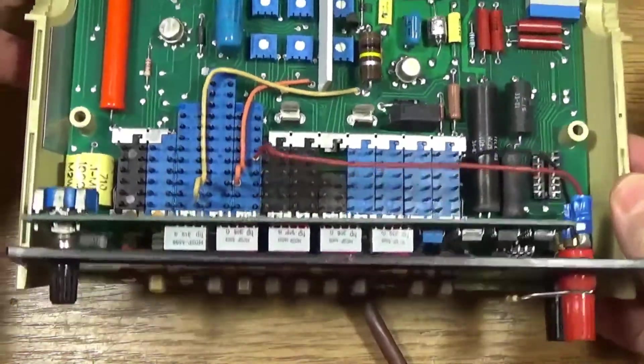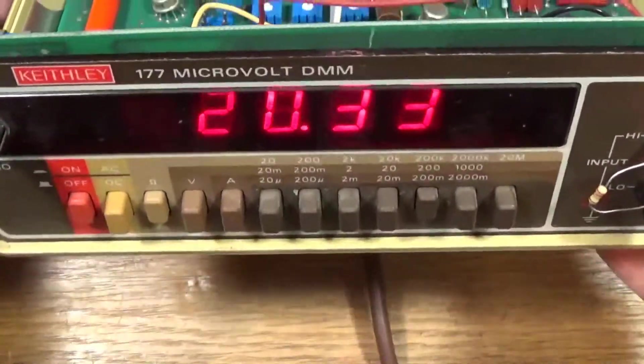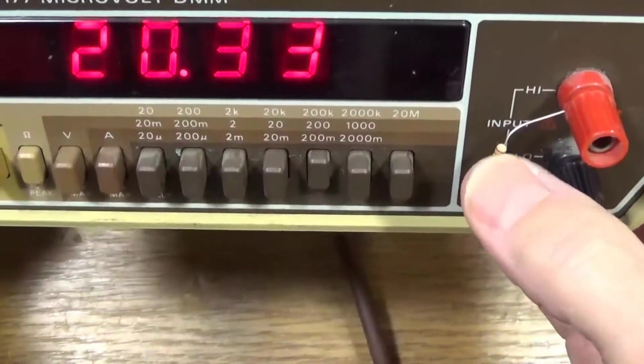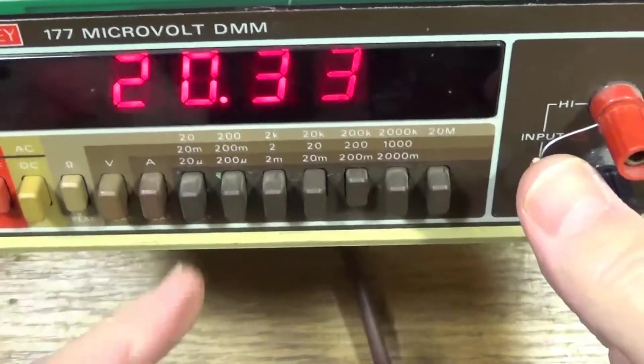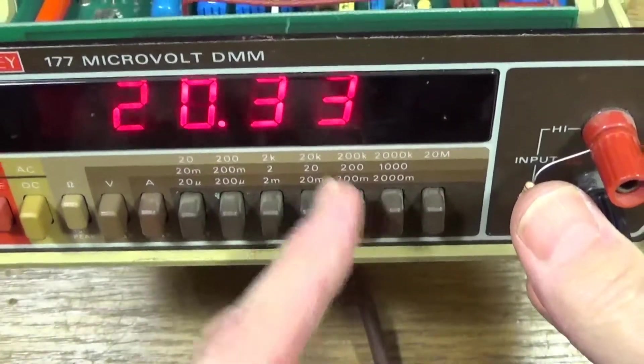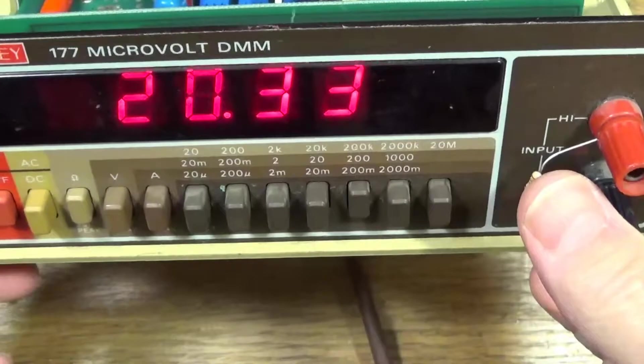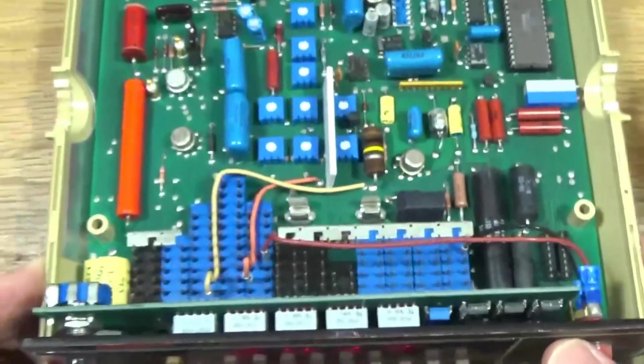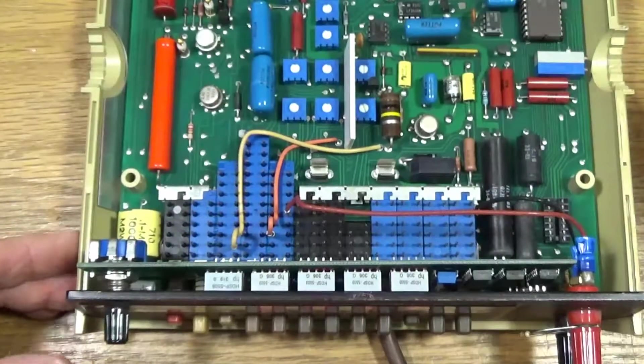It made all the difference in the world. I've got a 20k ohm resistor connected across the input there. Believe me, that's a 20k ohm resistor. I'm on the 200k ohm range and it's reading 20.33k. So the resistance is working. We'll see what happens when I hook up a voltage to it.